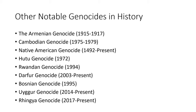Other notable genocides in history include the Armenian Genocide during World War I, the Cambodian Genocide in the 1970s, and some argue that what happened to Native Americans in North and South America — from 1492 to the present — could be considered genocide. The Hutu, Rwandan, and Darfur genocides all happened in Africa. The Bosnian Genocide happened in former Yugoslavia in the 1990s. The Uyghur and Rohingya genocides are both happening now in Asia, and we're going to talk about those in just a second.